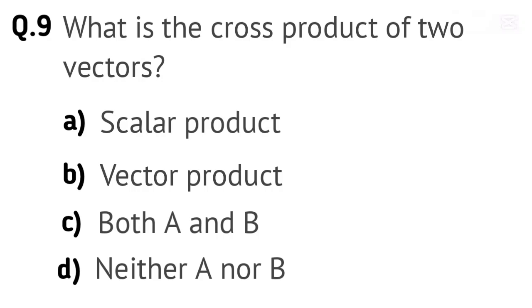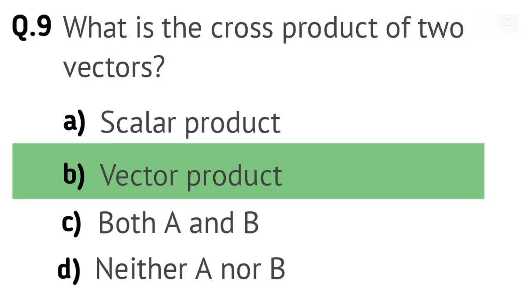Question 9. What is the cross product of two vectors? Options: A. Scalar product. B. Vector product. C. Both A and B. D. Neither A nor B. Right answer is B. Vector product.